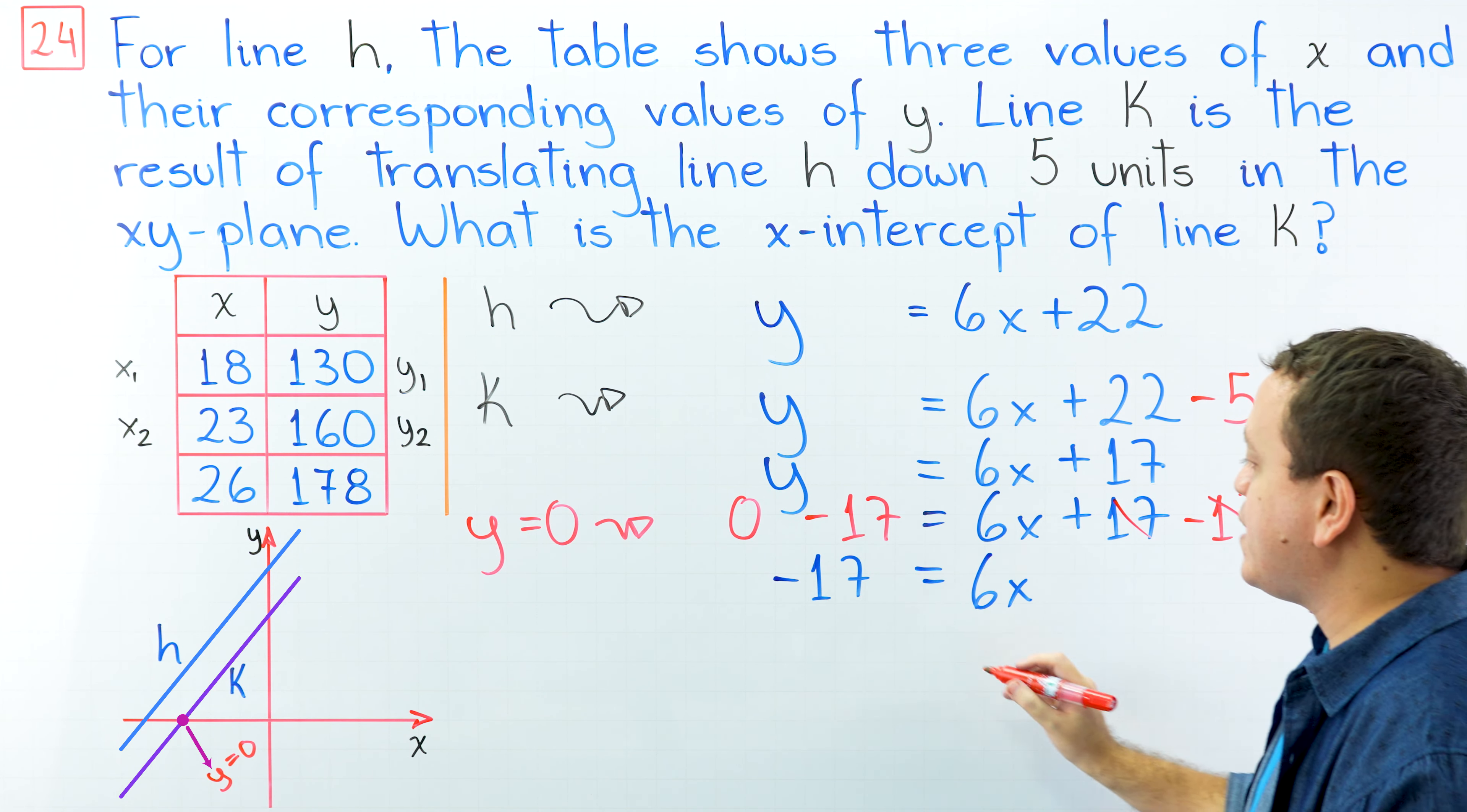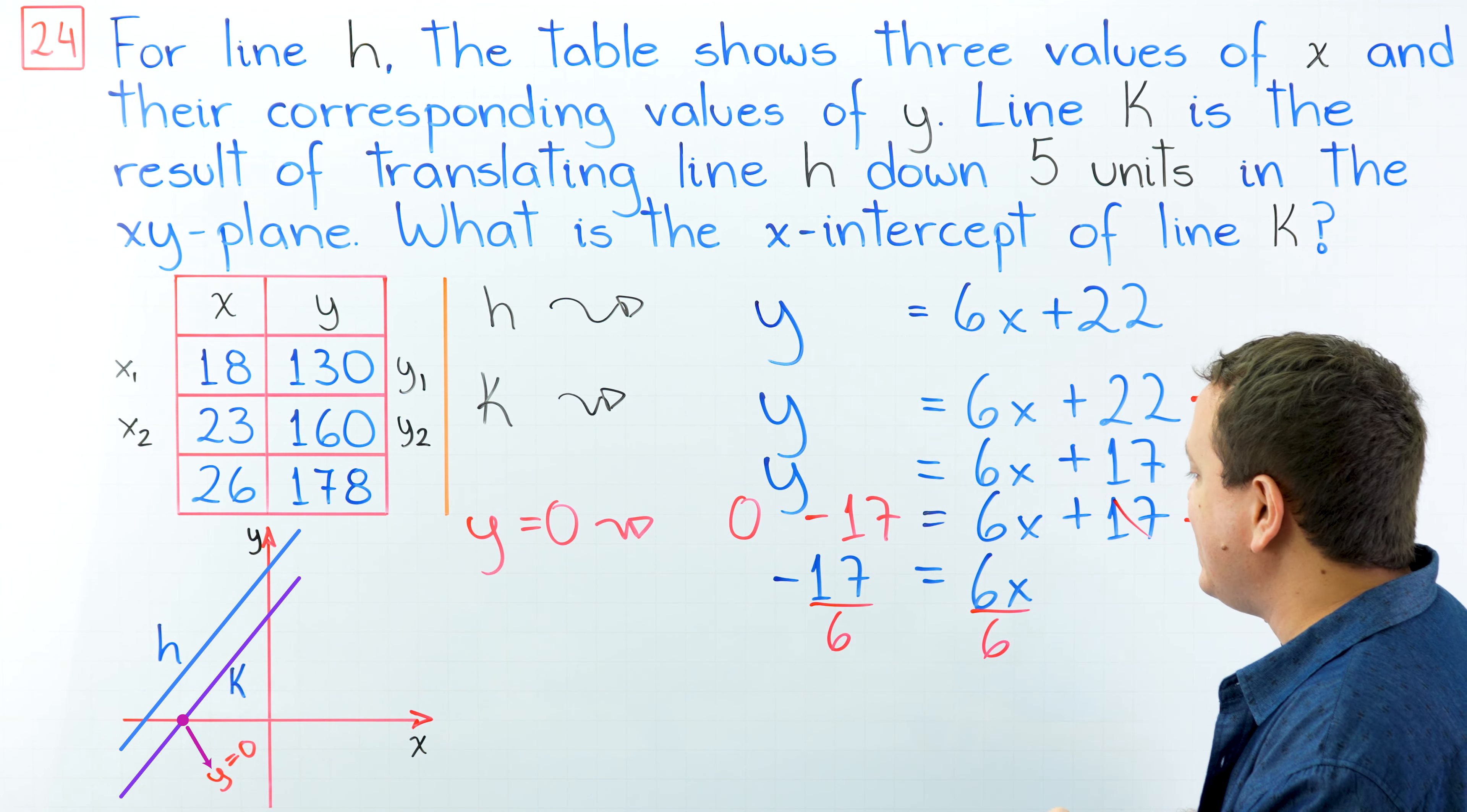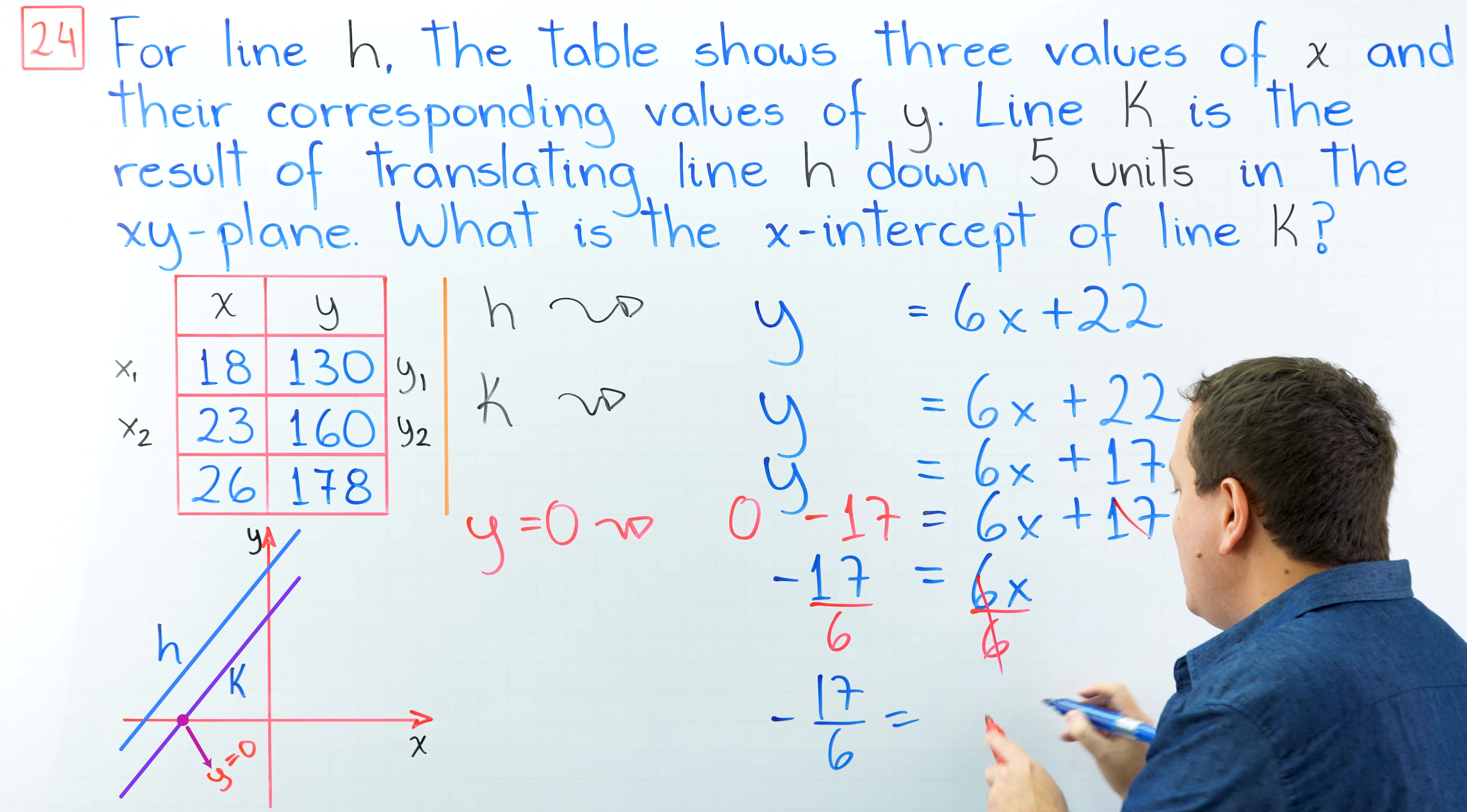Then, we're going to divide our whole equation by 6. Divide by 6, divided by 6. Finally, negative 17 over 6 is equal to x.